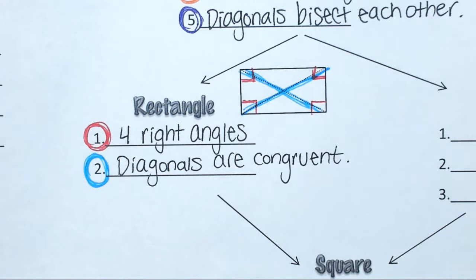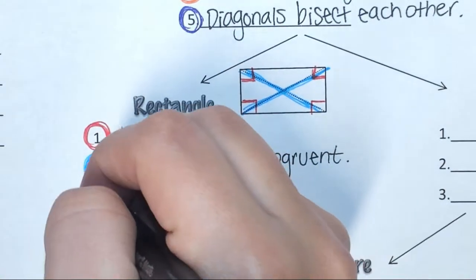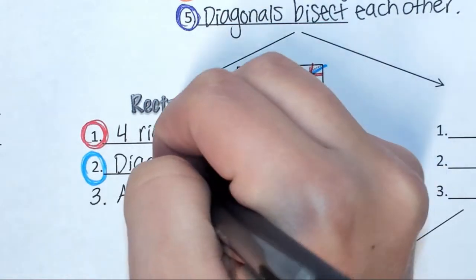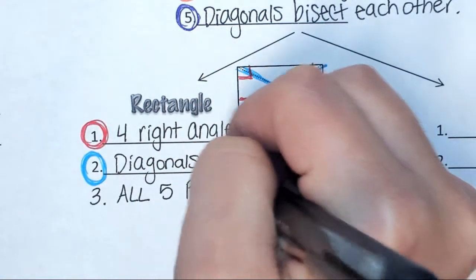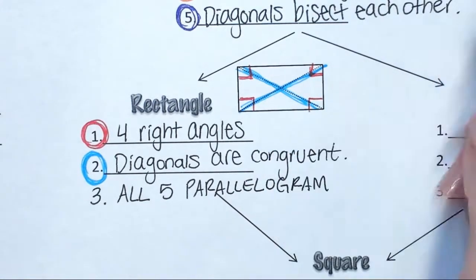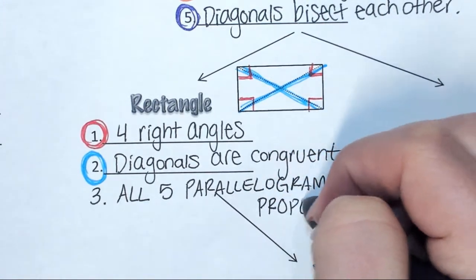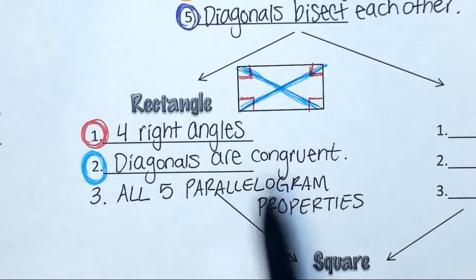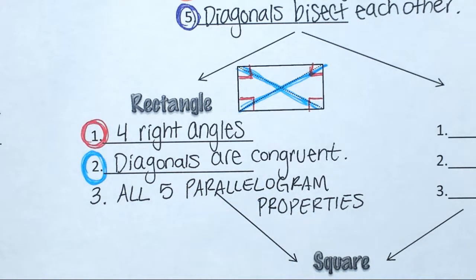True or false: a rectangle is a parallelogram. That's actually true, because the definition of a parallelogram is a shape that has these two sides parallel and these two sides parallel. Is that happening on a rectangle? Yes. So it is a parallelogram — a rectangle is a parallelogram. Because it's a parallelogram, I'm going to add one more property to rectangle: I can use all five parallelogram properties. So not only can I use these additional two, but I can use everything that I learned yesterday as well on a rectangle.